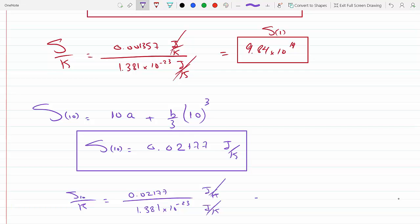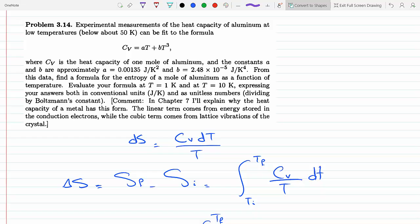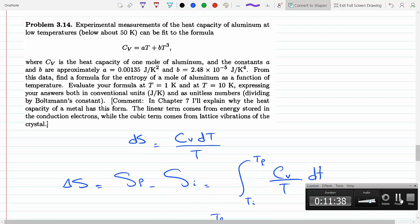We get 1.58 times 10 to the 21 dimensionless. That does it.